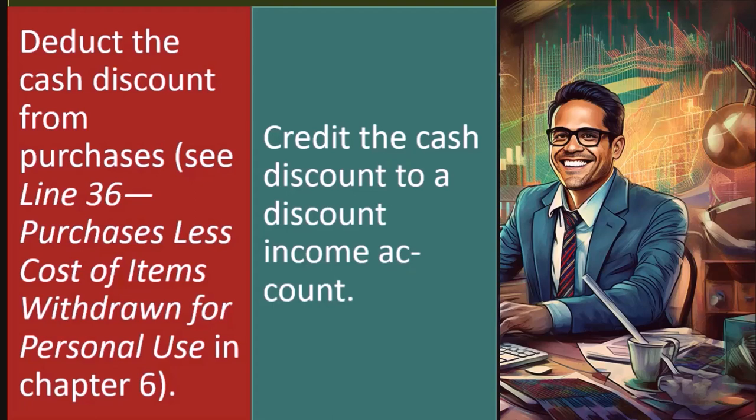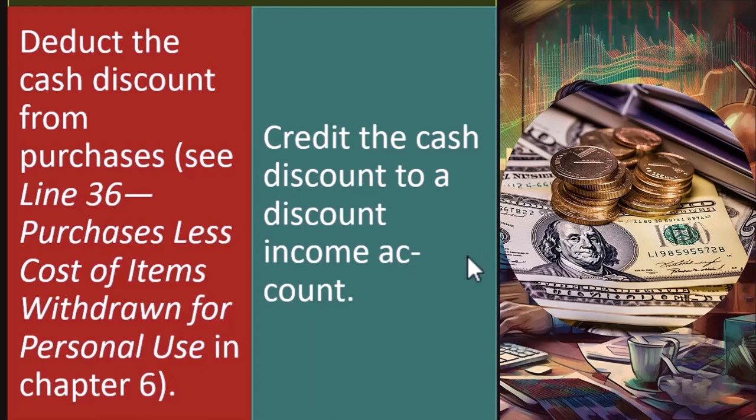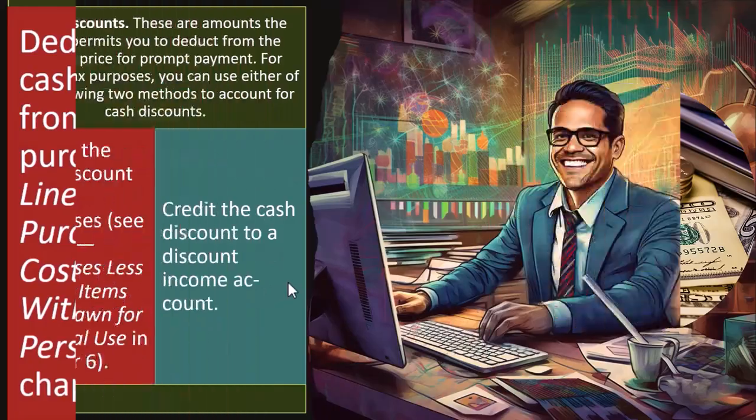When buying inventory, suppliers might give you a discount so they receive their money sooner. You could reflect that discount in the cost of the inventory — lowering it — so when you sell the inventory it's reflected in a lower cost of goods sold and a greater sales price, resulting in more income and more taxes. Alternatively, you could keep the inventory at normal cost since you may not always take the discount, and just credit the cash discount to the discount income account, recording it as income when you receive the discount.